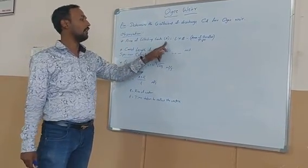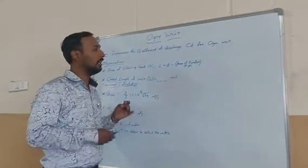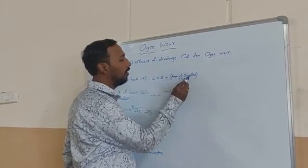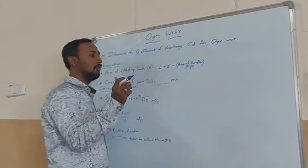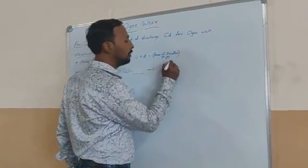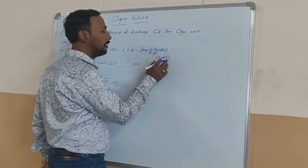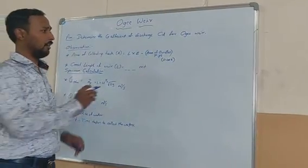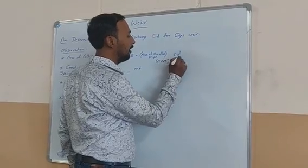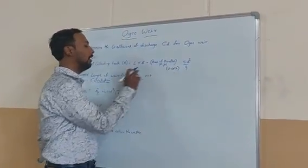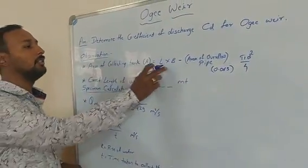In the observation, we have to measure the area of the collecting tank in the experiment — that is L into B. The tank has an overflow pipe of 63 mm, that is 0.063 meter. This is the diameter of that pipe. We have to calculate the area of this diameter, that is π D-squared by 4, and then calculate the total area of the tank.